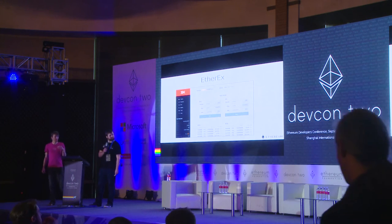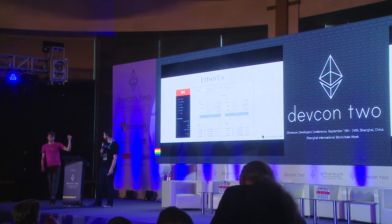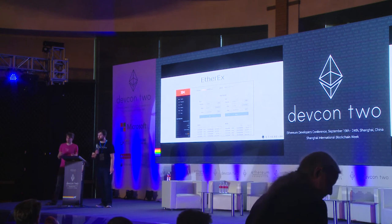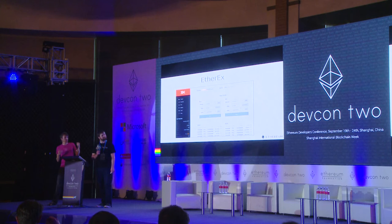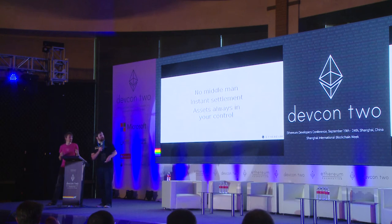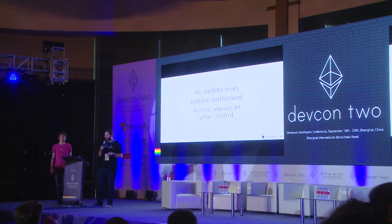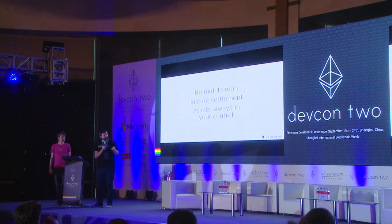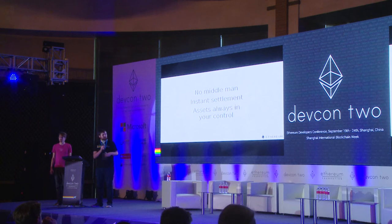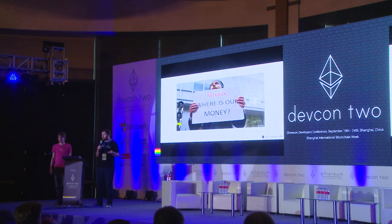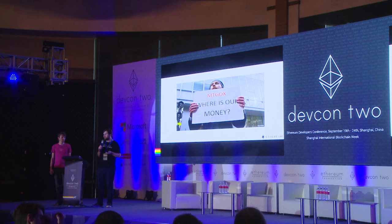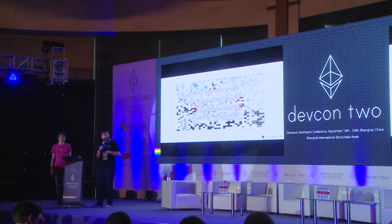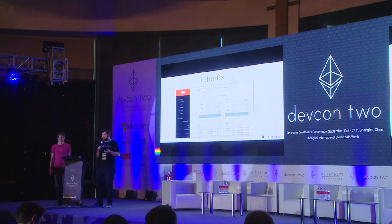One of the cool things these standards enable is a completely decentralized exchange where you can trade token pairs on the Ethereum blockchain. The reason we'd want something like EtherX is it doesn't have a middleman, it's instant settlement, and you control the assets. This is why things like Mt. Gox — a Bitcoin exchange that got hacked and had people's Bitcoin stolen — are less likely to happen, because with a decentralized exchange the contracts just talk to each other autonomously within the Ethereum network.